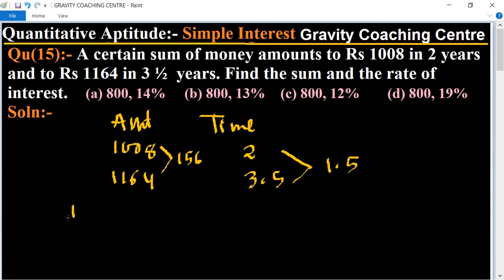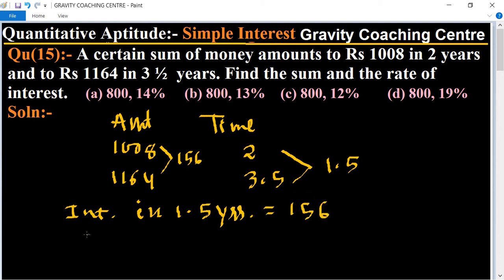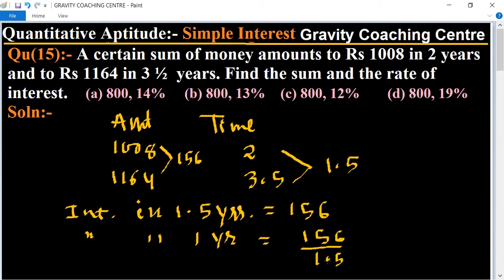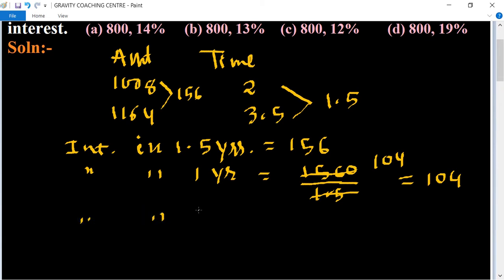Therefore, interest for 1.5 years equals rupees 156. So the interest in one year equals 156 divided by 1.5, which equals rupees 104. So 104 is the interest for one year.